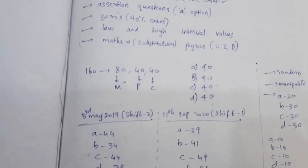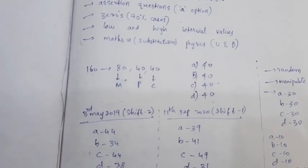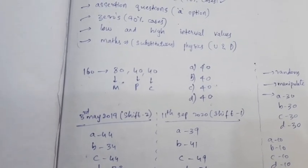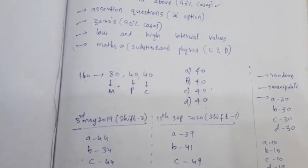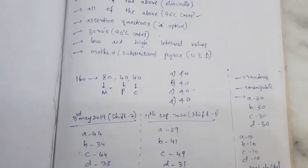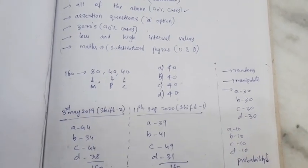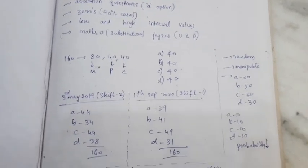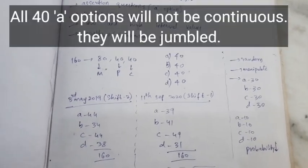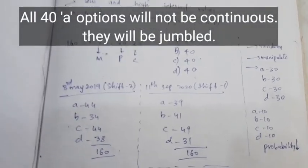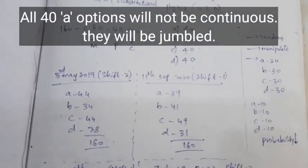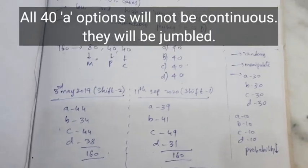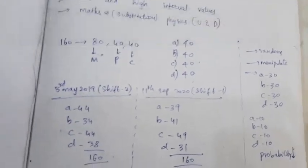There are 160 questions — 40 Math, 40 Physics and 40 Chemistry. In general, A option is 40, B option is 40, C option is 40, D option is 40.